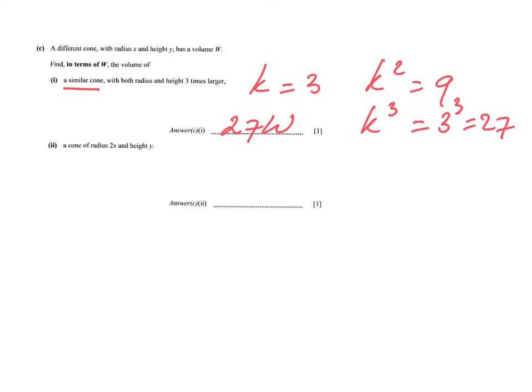Still find in terms of w, the volume of a cone of radius 2x and a height of y. So this is no longer a similar cone, so we kind of forget about similarity. This is a new question. But in terms of w, what is the volume of a cone with a radius of 2x? So twice as large, but the height remains the same.